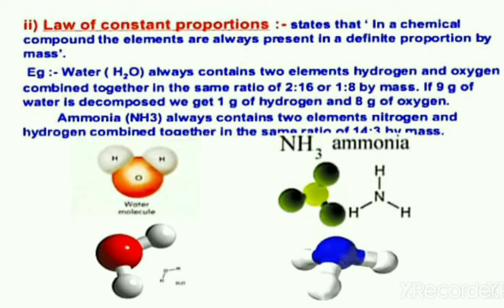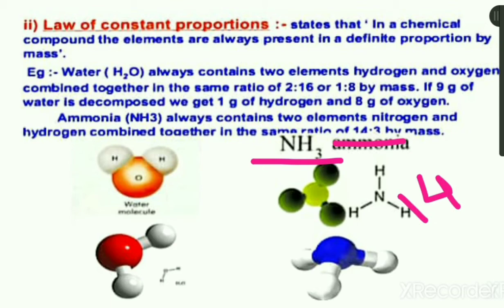Another example is ammonia. Ammonia is composed of two elements — nitrogen and hydrogen — with one nitrogen and three hydrogen present. These two elements are combined in the ratio 14:3. If you take 17 grams of ammonia and decompose it, you get 14 grams of nitrogen and 3 grams of hydrogen.